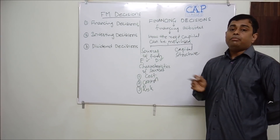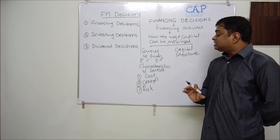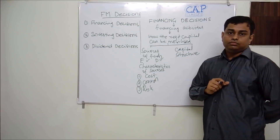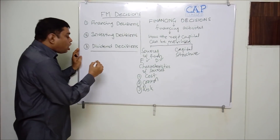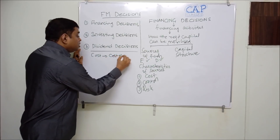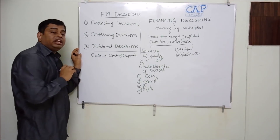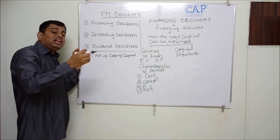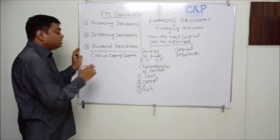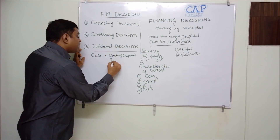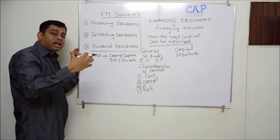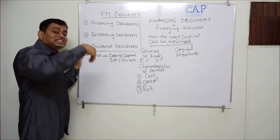Cost here refers to the cost of capital. Cost of capital is the cost to be incurred by the company when utilizing the capital contributed by the investor in the business. Simple examples of cost of capital are interest and dividends. If you borrow money you need to pay interest; if you issue shares and take proceeds from shareholders you need to pay dividends.